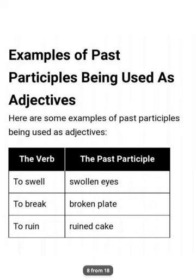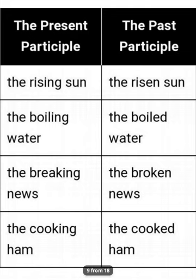'Swollen ice,' 'broken plate' — these are past participles acting as adjectives. They never denote the tense form. Present participle vs. past participle: 'the rising sun' vs. 'the risen sun'; 'the boiling water' vs. 'the boiled water'; 'the breaking news' vs. 'the broken news'; 'the cooking ham' vs. 'the cooked ham.' These all act as adjectives.